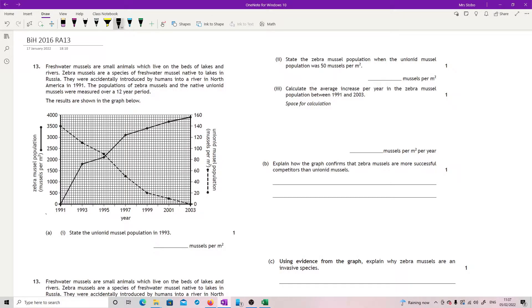Question 13. Freshwater mussels are small animals that live on the beds of lakes and rivers. Zebra mussels are a species of freshwater mussel native to lakes in Russia. They were accidentally introduced by humans into a river in North America in 1991.